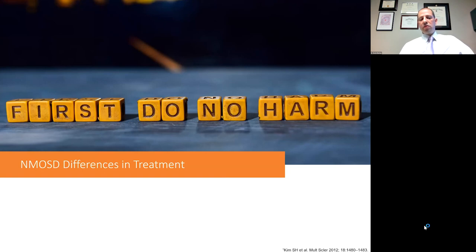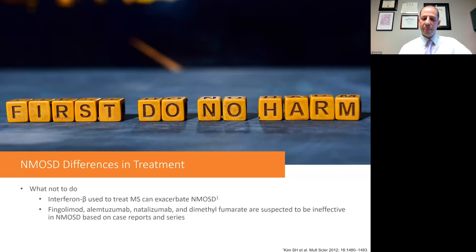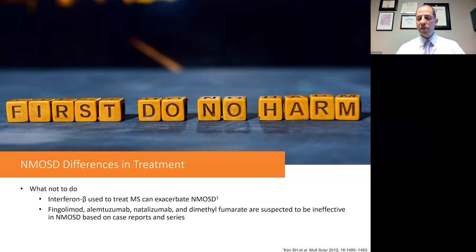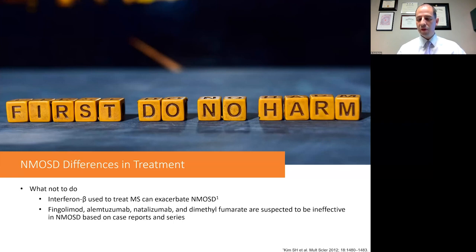I alluded to some differences in NMO spectrum disorder treatment, and this reminds me of the saying to first do no harm. It's important to identify this disorder and distinguish it from multiple sclerosis because some treatments like interferon beta can actually exacerbate neuromyelitis optica spectrum disorder. Furthermore, some of the common medications used to treat multiple sclerosis are thought to be ineffective for NMO spectrum disorder. Although there are some that may be helpful for both, there are certainly quite a few that are either harmful or just not helpful for treating NMO spectrum disorder.